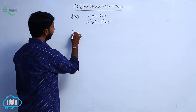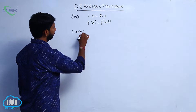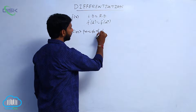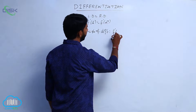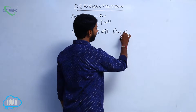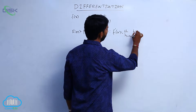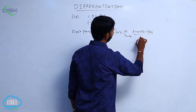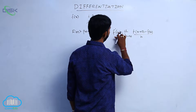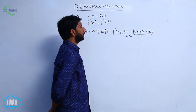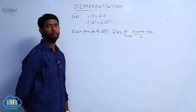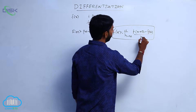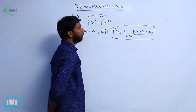The first principle of differentiation is: f dash of x is equal to limit h tends to 0, f of x plus h minus f of x, divided by h. This is called the first principle of differentiation, or the fundamental theorem of differentiation.